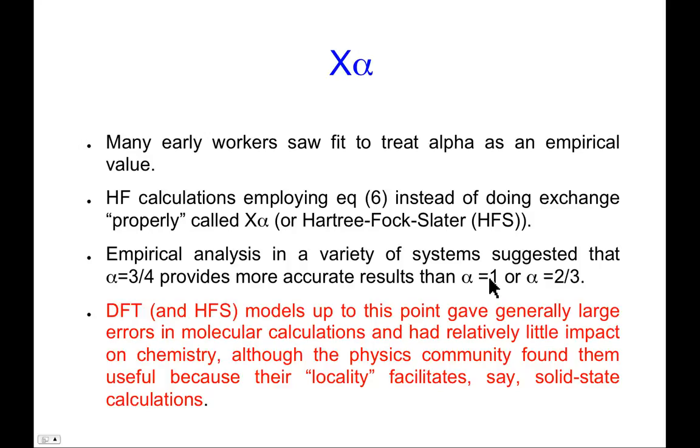In practice, what people found was that rather than using an α value equal to one, which derives from Slater, and it turns out that earlier Dirac had done a different analysis of how to compute exchange energy from the uniform electron gas and come up with a value of two thirds for α. Now, in practice, people who played around with treating α as an empirical parameter discovered that something roughly halfway in between, three quarters, tended to give more accurate results when looking at, say, molecular geometries, spectra, what have you. And that defined a level of theory that came to be called X-alpha.